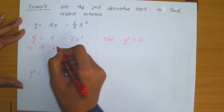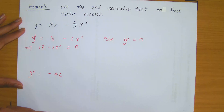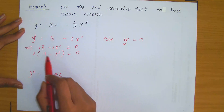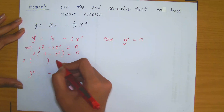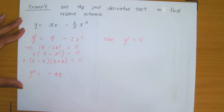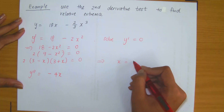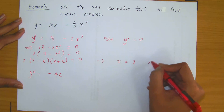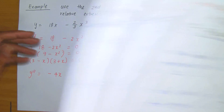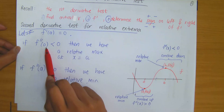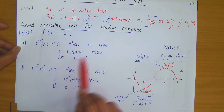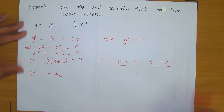Before using the second order derivative, I need the critical values, which means I need to solve y' equals 0. Setting 18 minus 2x squared equal to 0 and factoring out positive 2 gives 2 times (9 minus x squared). Factoring further using the difference of squares: 2 times (3 minus x) times (3 plus x). So the critical values are x equals 3 and x equals negative 3. Based on it being positive or negative, we determine if there is a relative maximum or minimum at each point.